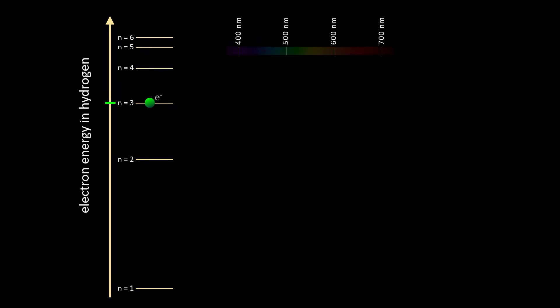An electron transitioning from N equals 3 to N equals 2 emits a red photon. From 4 to 2 gives a bluish green color, 5 to 2 gives blue, and 6 to 2 gives violet. Notice that in the transition, the electron does not exist in between those two allowed energies.